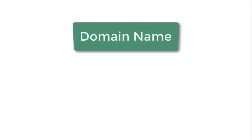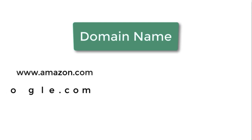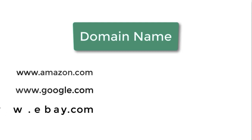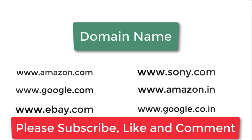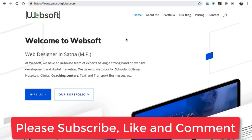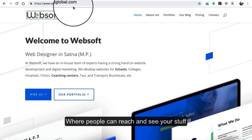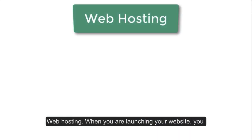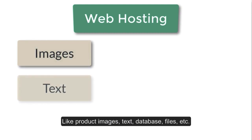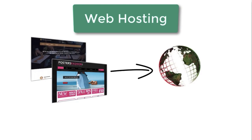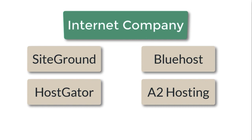Domain name is the name of your website. For example, Amazon has its own domain name www.amazon.com or www.amazon.in. In the same way, Sony has www.sony.com. In one sentence, domain name is the name or address of your website where people can reach and see your stuff. Web hosting is the space you need to put your website content on the internet, like product images, text, database, and files. This web space can be purchased from companies like SiteGround, HostGator, Bluehost, or A2 Hosting.